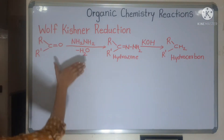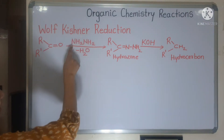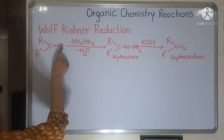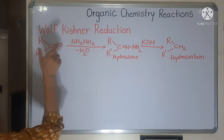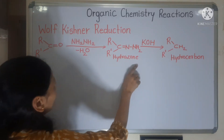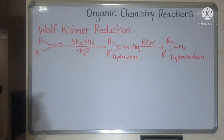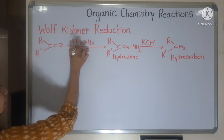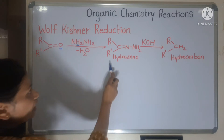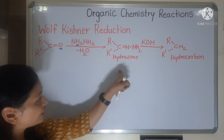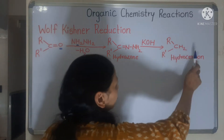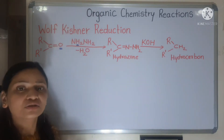This is a two-step reaction. In the first step, hydrazine (NH2NH2) reacts with the ketone — RC(=O)R' — the H2 from hydrazine and the oxygen from the carbonyl eliminate as H2O, and hydrazone is formed. In the second step, when KOH (alkali) attacks the hydrazone, it gets converted into hydrocarbon.